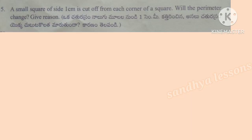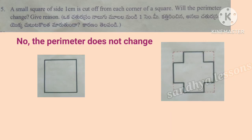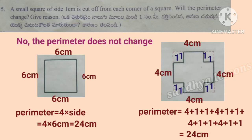Fifth problem: A small square of side 1 centimeter is cut off from each corner of a square. Will the perimeter change? No, the perimeter does not change. Consider a square of side 6 cm; its perimeter equals 4 into 6 cm, which equals 24 cm. If we cut off a small square of side 1 cm from each corner, the perimeter of the resulting shape remains 24 cm. So, cutting corners does not change the perimeter.